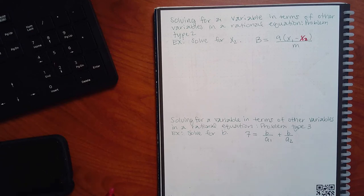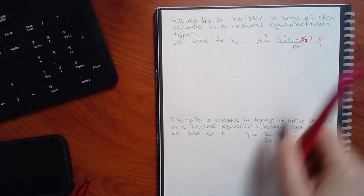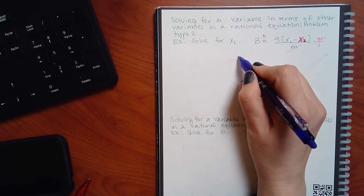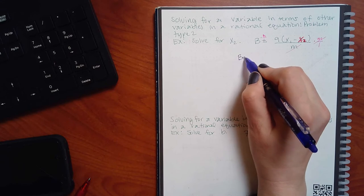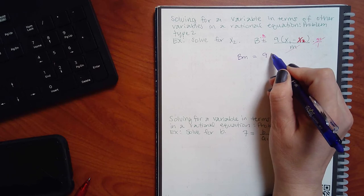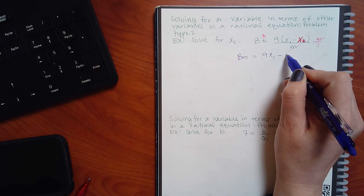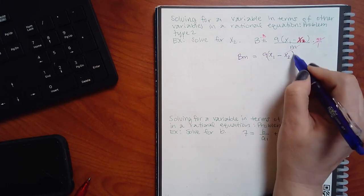We still have to find the common denominator. This time it's going to be m, so multiply by m over one on both sides. These guys will cancel, and on the left you'll have b times m, which equals 9 times the quantity (x₁ minus x₂) in parentheses.